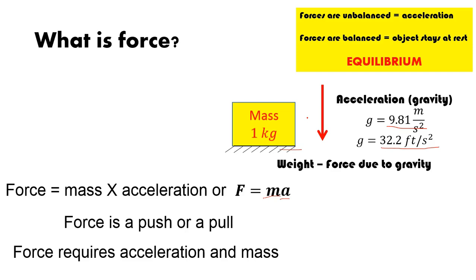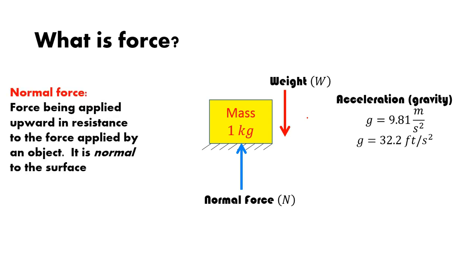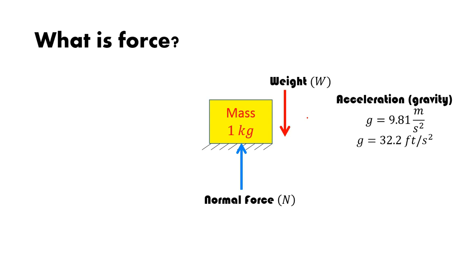The downward force due to gravity must be balanced by something. What keeps us from going to the center of the earth is called the normal force — the force applied upward in resistance to an object's weight. We call it 'normal' because that force acts perpendicular to the object's surface.